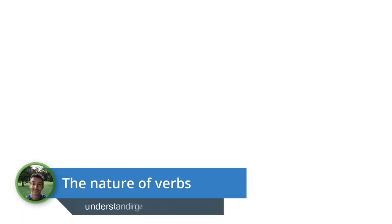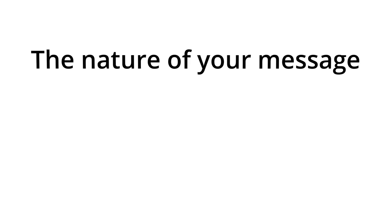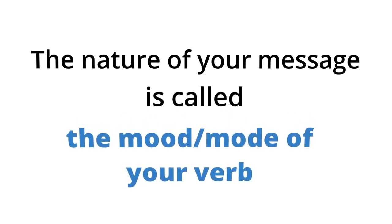Hi, this is Adam, and in this video I want to teach you the first essential consideration when it comes to understanding verb conjugation, which is probably the hardest thing to learn in Spanish. That consideration is the nature of your message. In English we have what we call the mood or the mode of a verb, and because the verb is what gives meaning or life to an idea or sentence, you have to consider what the mood or nature of your message is so that you can conjugate it the right way in Spanish.